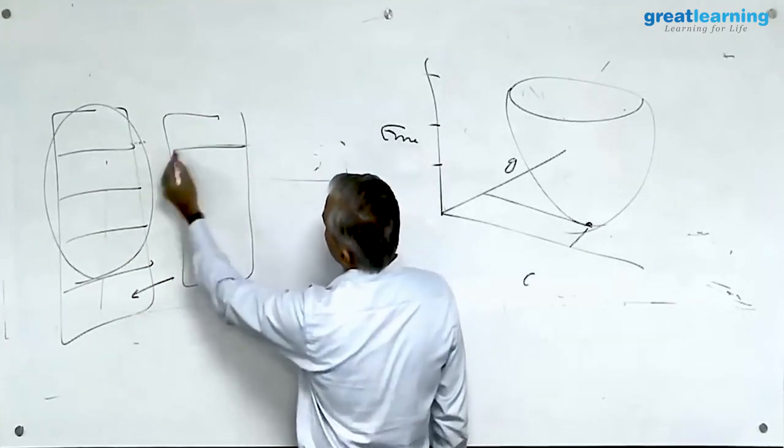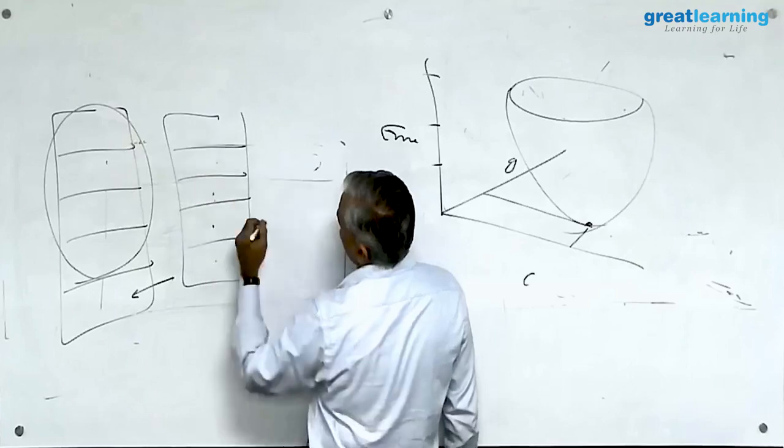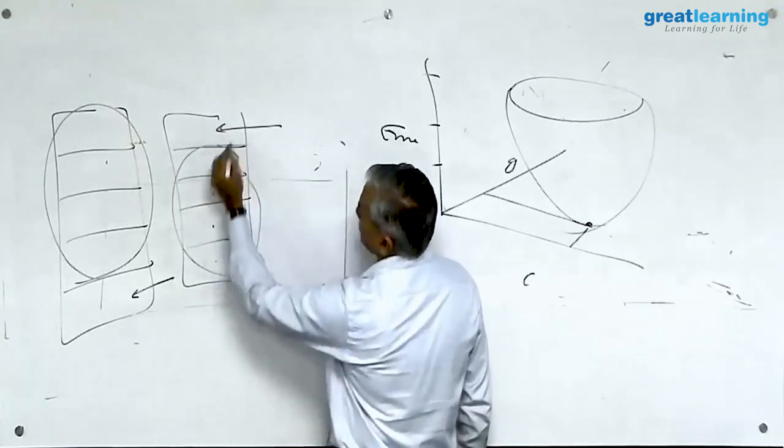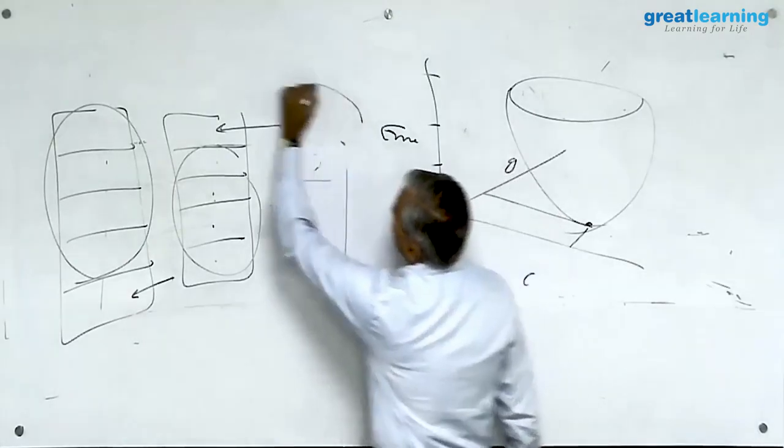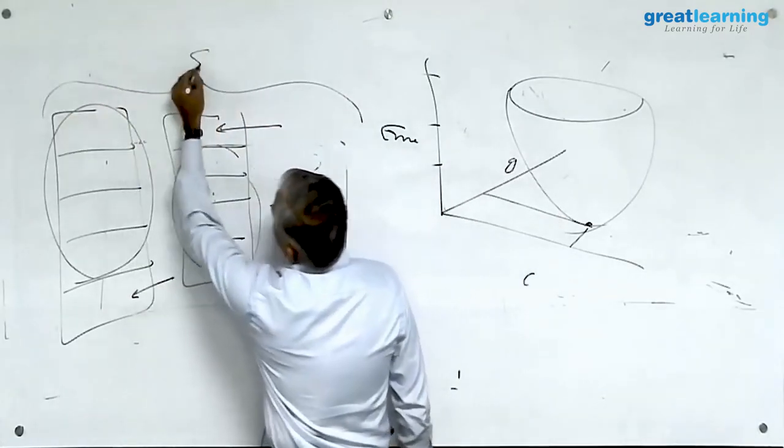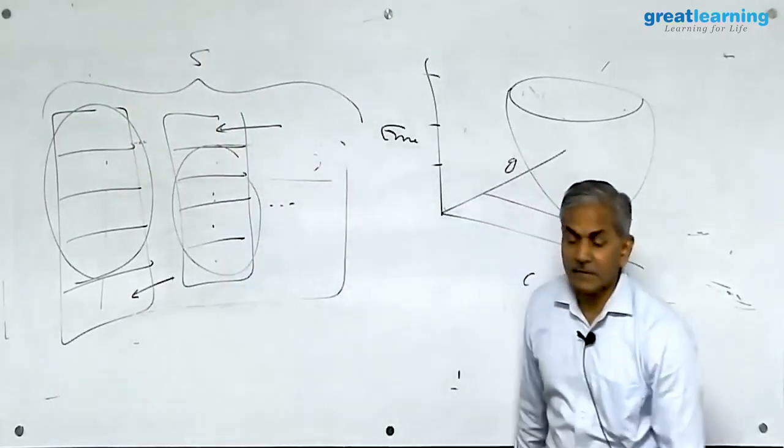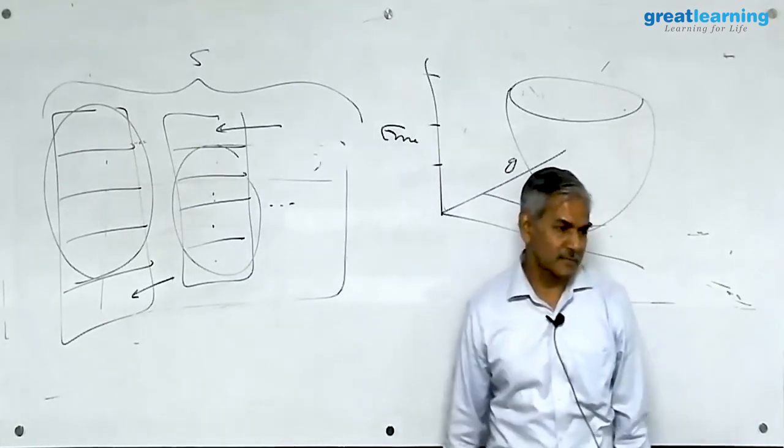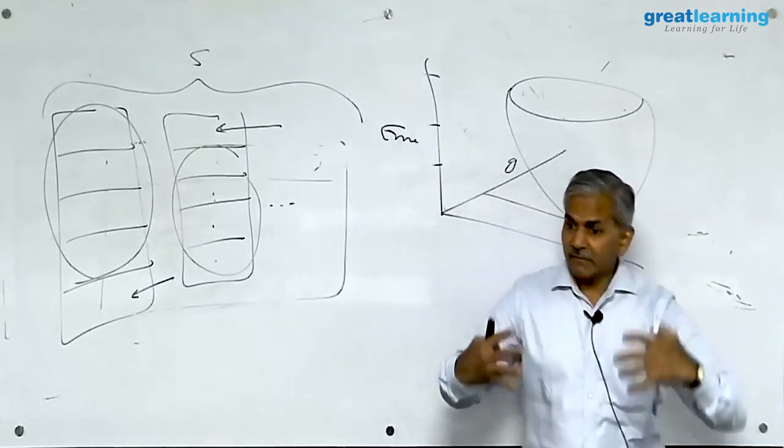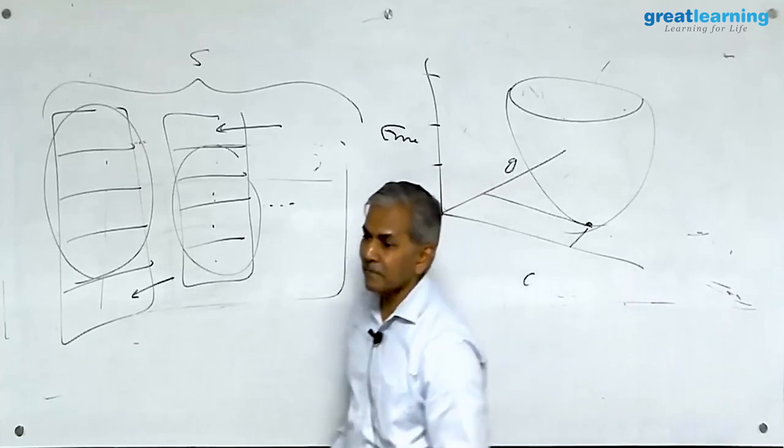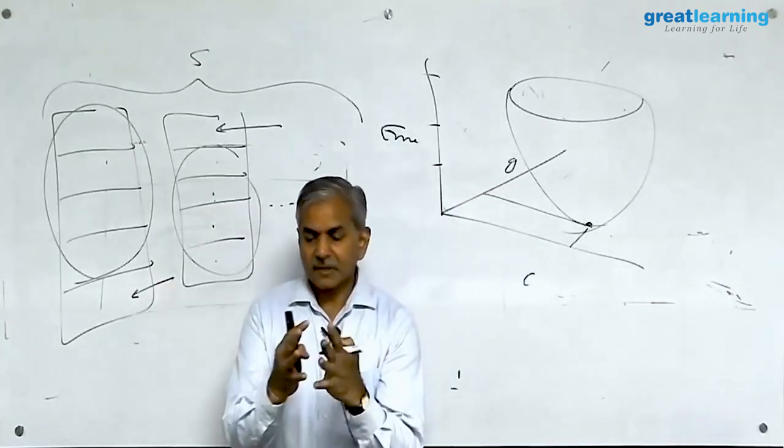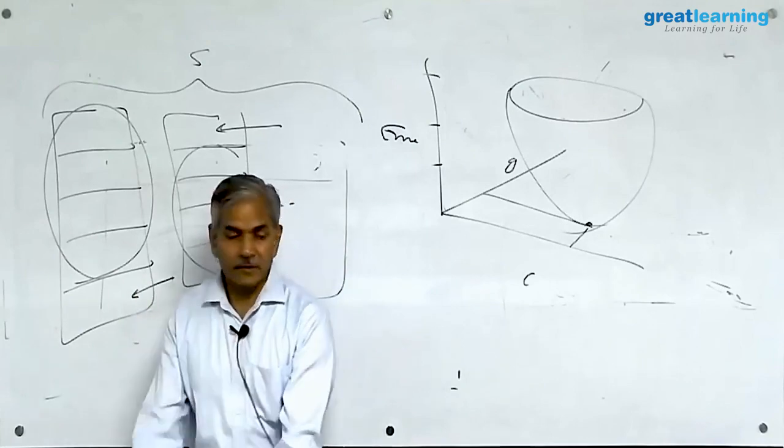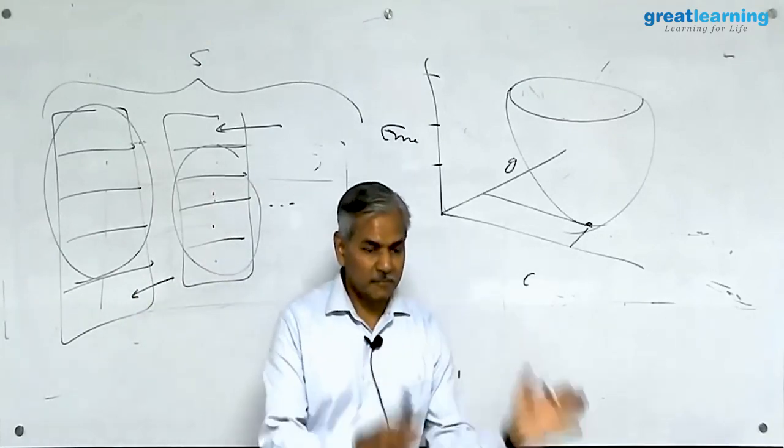Again train your model on some other 4 and test on this. So this exercise will happen 5 times. Each time it will take a different 5, different 4 and test on the 5th. So 5 times the models will be created. 5 accuracy reports will be given to you. Average is out, that is the overall average accuracy of the model you can expect in production.